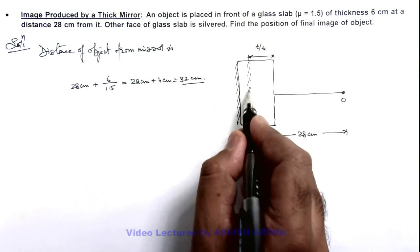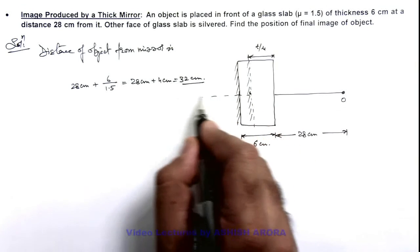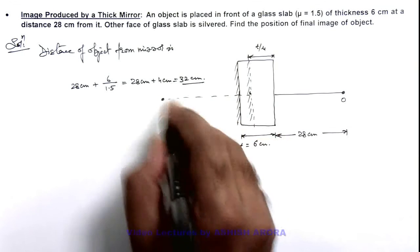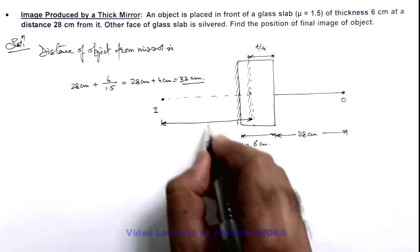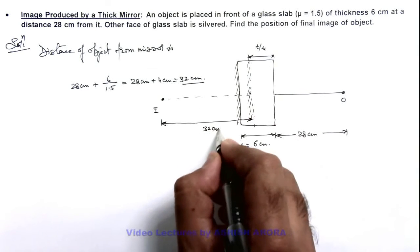As in a plane mirror, always the object distance equals image distance. So if this is the image produced, we can say the distance of image from this apparent position will be 32 centimeters.